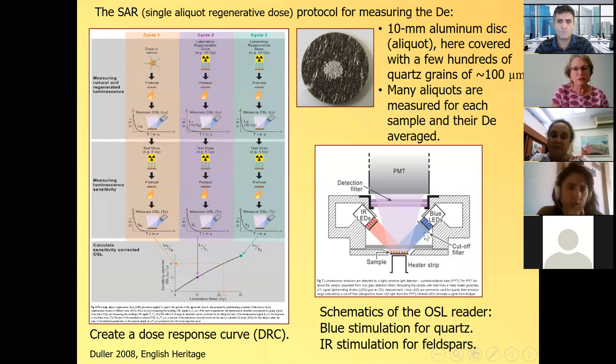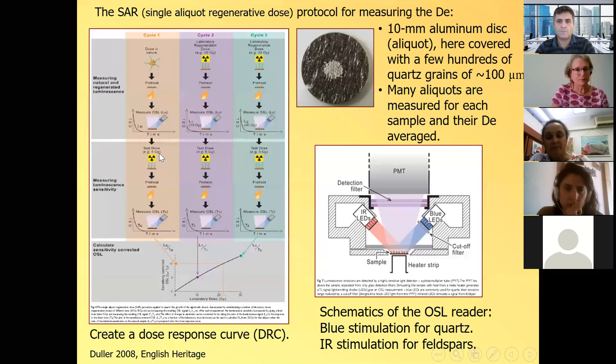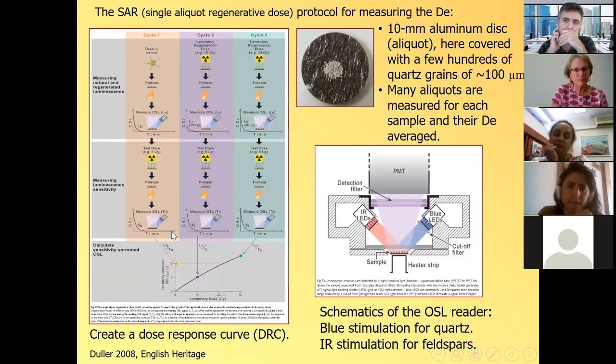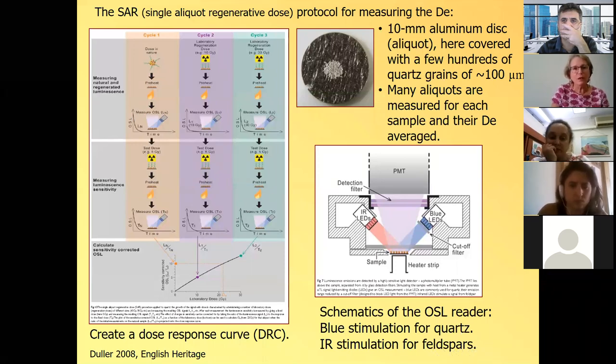We heat it to a certain temperature, and then we measure the signal. We turn on these blue LEDs, and what we get is this luminescence signal. And then we do something that's called normalization. We give the sample a small beta dose. Usually the readers, the TLSL readers have a beta source. We give it a small beta dose. We preheat it, and then we measure the signal. And this signal is used to normalize the first signal.